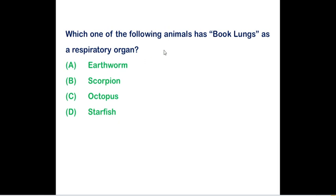Which one of the following animal has book lungs as a respiratory organ? The correct answer is option number B. Scorpion and spiders will be having book lungs with them. Arachnids will be having book lungs. As we take octopus and starfish, they will be having gills as a respiratory organ.